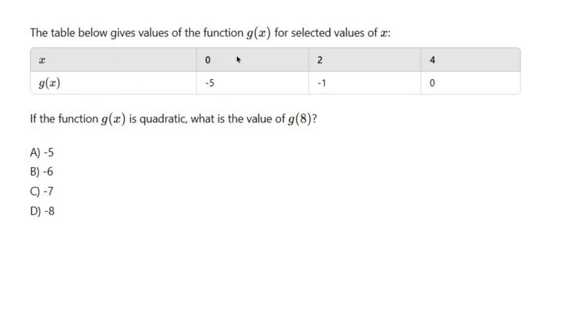The table below gives values of the function g(x) for selected values of x. So x, you have 0, 2, 4. Those go up by 2 every time, so equal length input value intervals. And g(x) is a mess, but what we do know is it's quadratic. So what is the value of g(8)?